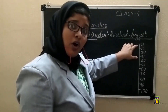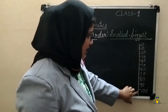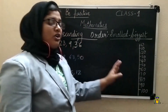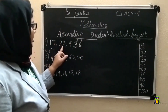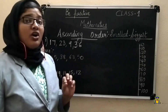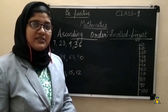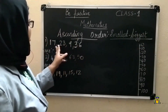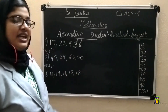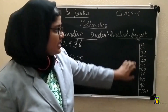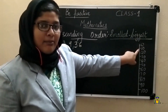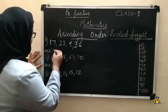Here is the first question: 17, 23, 9, 36. We want to arrange these in ascending order. Ascending order means arranging numbers from smallest to biggest. Which is the smallest number? That is 9. In the range 0 to 10, we have 9, so we write 9 first and cross it out.